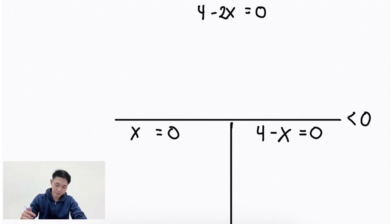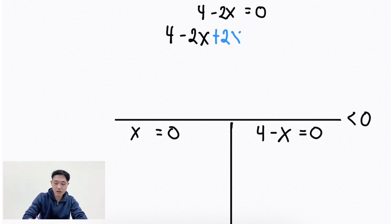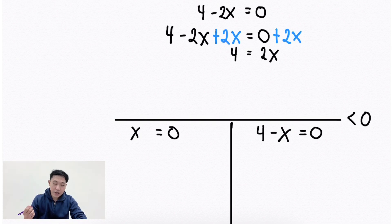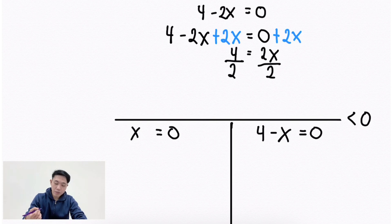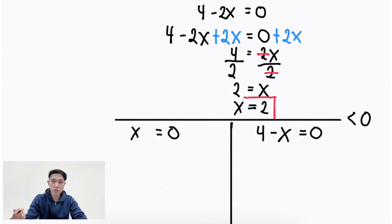Solve for x values. For the numerator, use the addition property of equality: 4 minus 2x plus 2x equals 0 plus 2x. Combining like terms: 4 equals 2x. Applying the division property of equality, divide both sides by 2: 4 divided by 2 equals x. By symmetric property, x equals 2. We have now the first critical value.